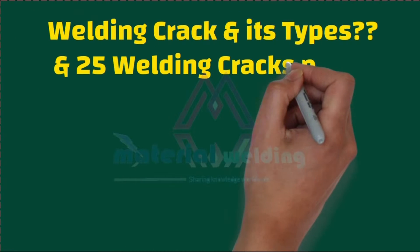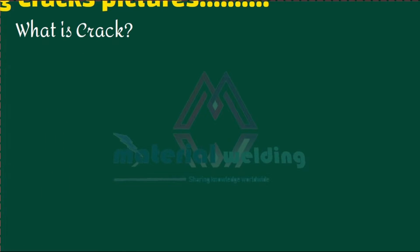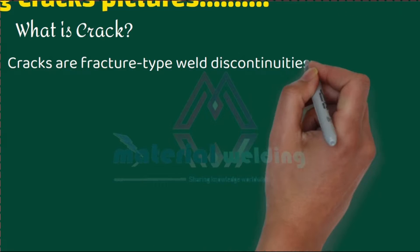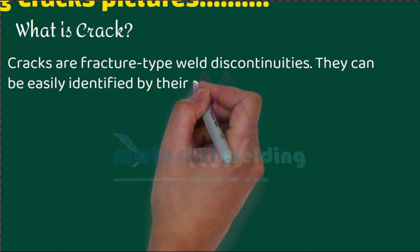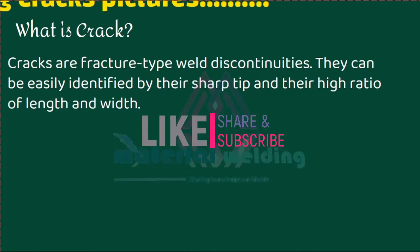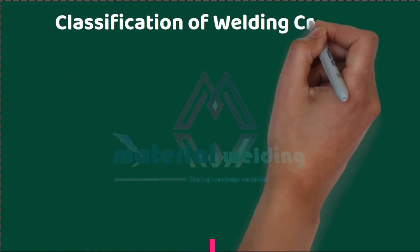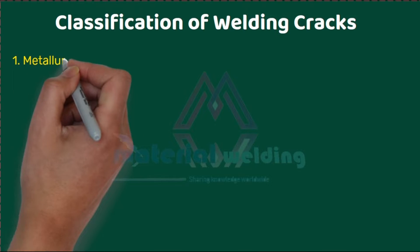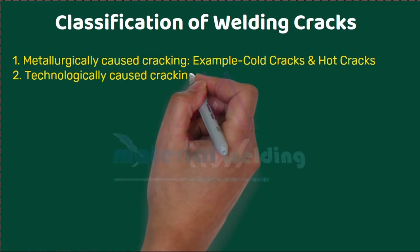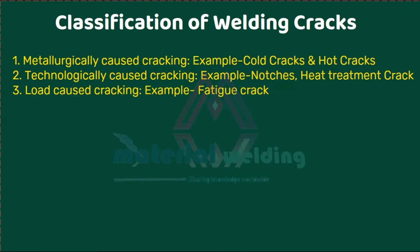Watch this video and learn what is a welding crack and its types with examples. A crack is a fracture-like welding defect with a sharp tip having a length much higher than its width. Cracks based on their cause are classified into three types. They appear in various shapes and at different locations.